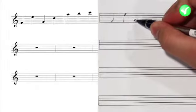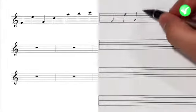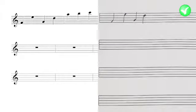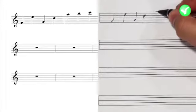Notes below the center line have stems that go up, and notes above the center line have stems that go down. Stems for notes placed on the center line can go either direction, but they usually go down.